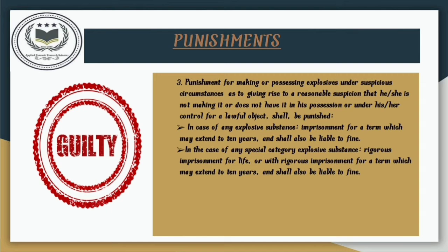The third punishment is for making or possessing explosives under suspicious circumstances — giving rise to a reasonable suspicion that the person is not doing so for a lawful object — and the offender shall be punished. For less dangerous explosive substances, the punishment is imprisonment for a term that may extend up to 10 years along with fine. For special category explosives such as RDX (Research Development Explosives), PETN, or TNT, the person will be imprisoned for life or for a term extending up to 10 years along with fine.